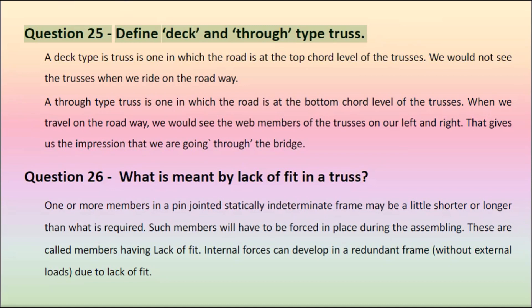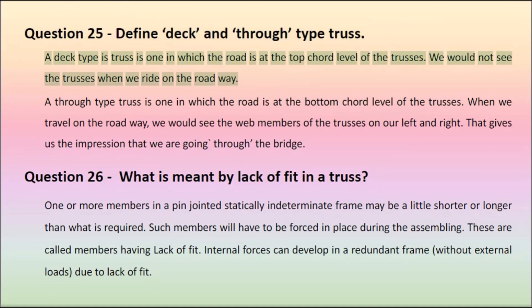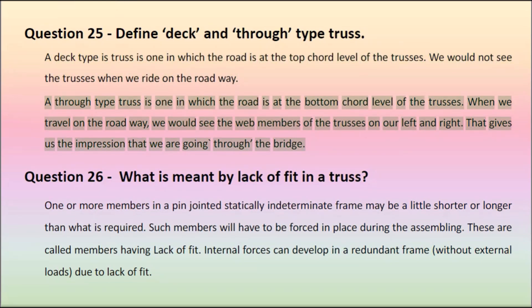Question 25: Define deck and through-type truss. A deck-type truss is one in which the road is at the top chord level of the trusses — we would not see the trusses when we ride on the roadway. A through-type truss is one in which the road is at the bottom chord level of the trusses. When we travel on the roadway, we would see the web members of the trusses on our left and right, giving the impression that we are going through the bridge.